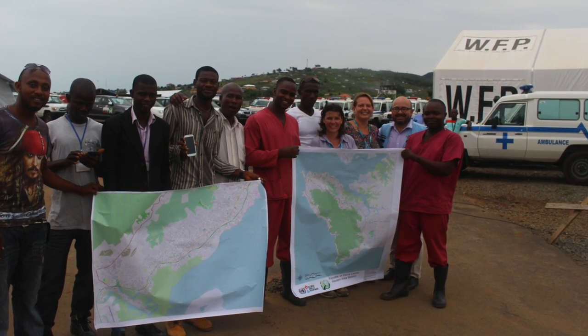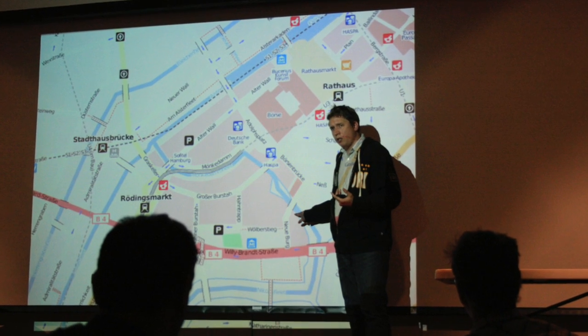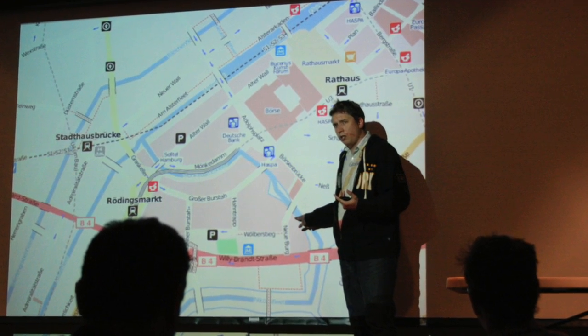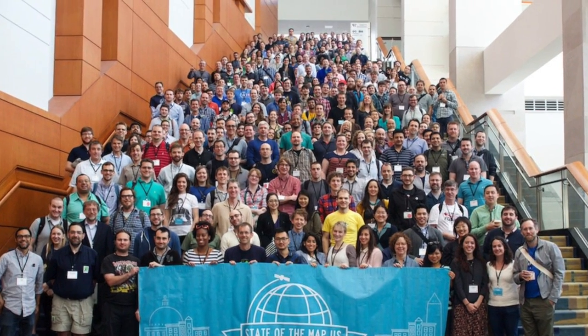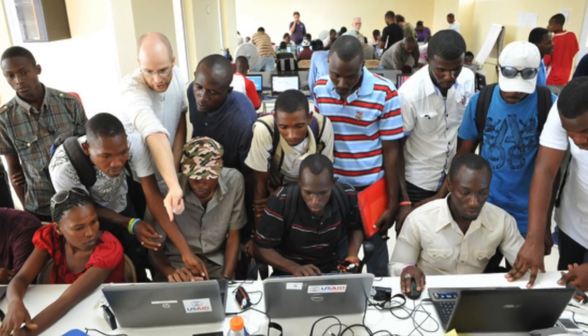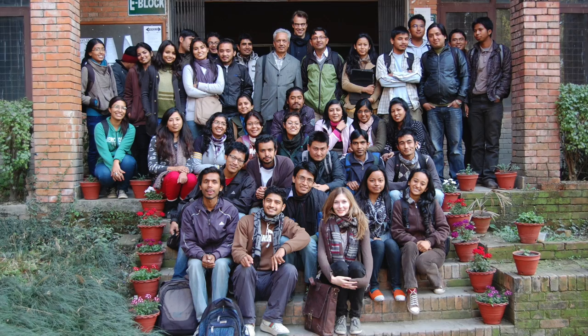OpenStreetMap was started in the UK in 2004 when its founder, Steve Coast, had a hard time finding maps and geographic data he could use. It's grown to include millions of contributors from all over the world.